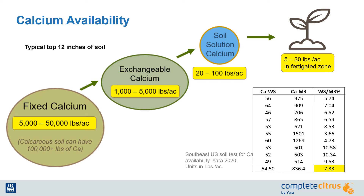Looking at the visuals on this slide, we see that in the typical top 12 inches of soil, there is approximately 5,000 to 50,000 pounds of calcium per acre. This is fixed calcium that is not available for plant uptake. Exchangeable calcium is much lower, somewhere between 1,000 and 5,000 pounds an acre, and is found on exchange sites such as clay and organic matter in the soil.